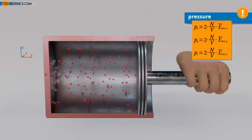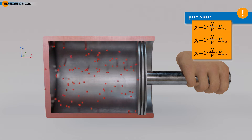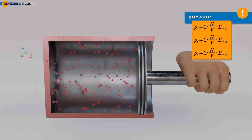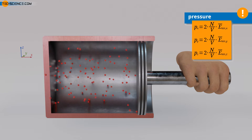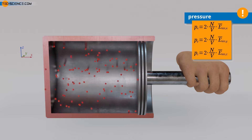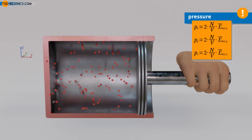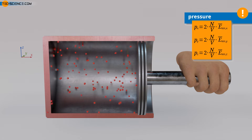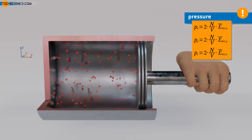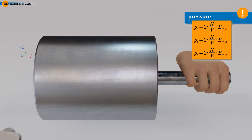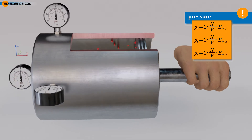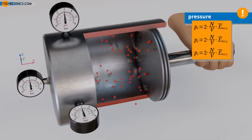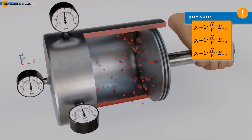Practice shows that the pressure in gases is always equally distributed in all spatial directions, even if only the velocity component in the x-direction is changed. To demonstrate this, a cylinder sealed with a piston can be equipped with three pressure gauges mounted at right angles to each other, so that the pressure in various spatial directions can be measured separately. In fact, the pressure for all three directions is found to be identical.